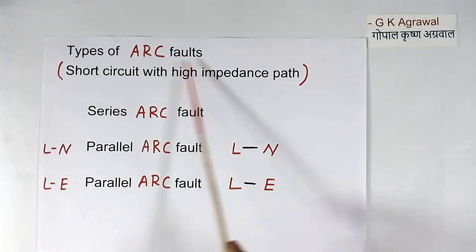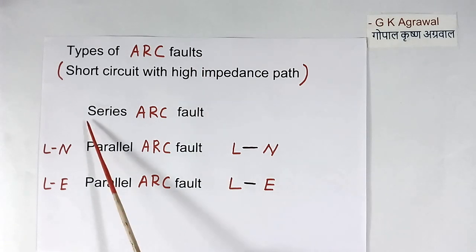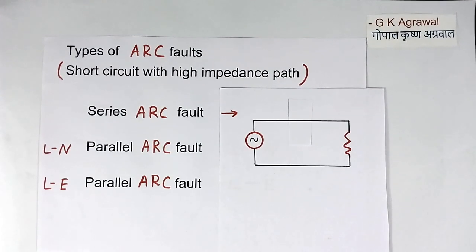Now arc faults are 3 types. First type is series arc fault. Second is line to neutral parallel arc fault. Third is line to earth parallel arc fault. Now first I will explain what is series arc fault.